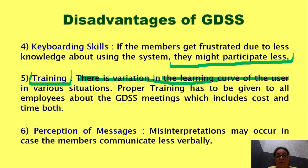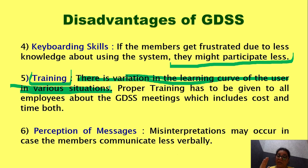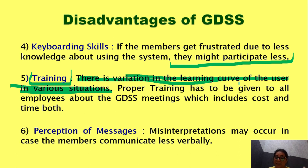Fifth is training, which is very important. There is a variation in the learning curve of the user in various situations. In a particular organization, there will be different types of employees, and their learning patterns will be different. Their grasping power towards new technology and new software can be different. So we cannot expect that all 20 employees will learn the GDSS meeting system equally well. Proper training has to be given to all employees, which can include both cost and time.